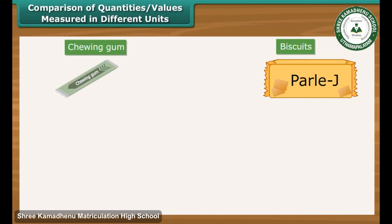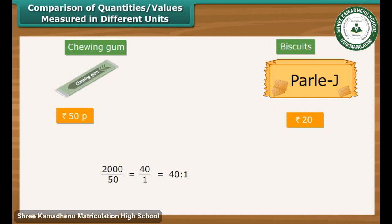Hari has bought a chewing gum for 50 paise. His friend Shiv has bought a packet of biscuits for Rs. 20. Who spent more money and by how many times? Before comparing, we express Rs. 20 as 2000 paise. Now we can work out the ratio: 2000 by 50 is 40 by 1, which is equal to 40 is to 1. Therefore, Shiv has spent 40 times more money than Hari.